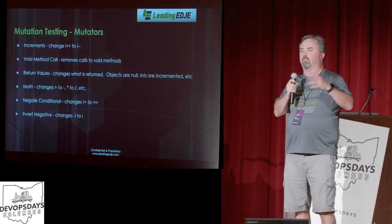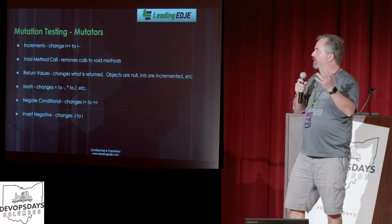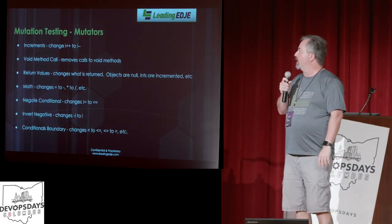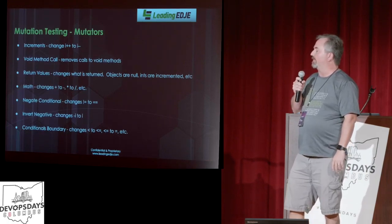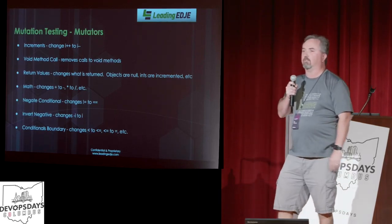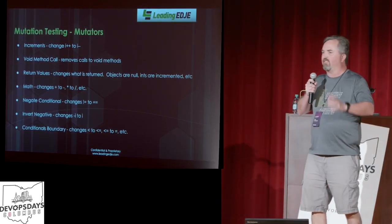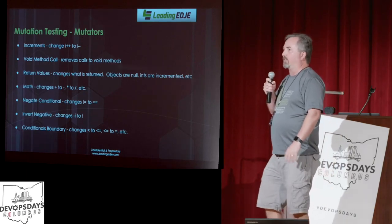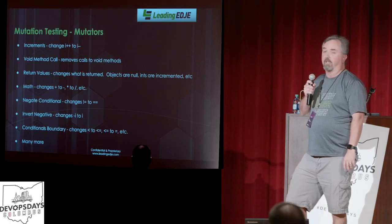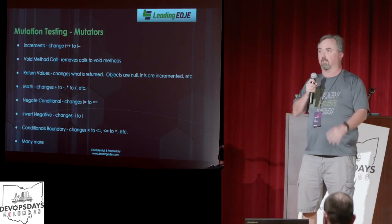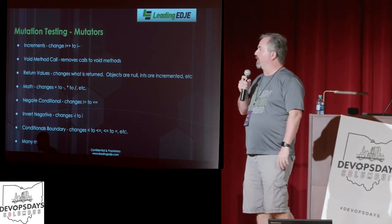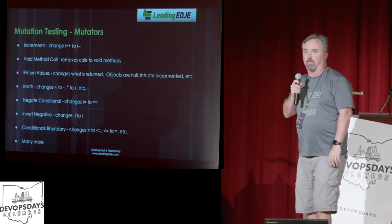There's a whole bunch more. These are just mostly the defaults you get out of the box when you want to run it. It'll also change boundary conditions — like if you have less than, it'll do less than or equal. So again, it's going through your code and fiddling with it like crazy and making sure all your tests better fail. There are many more mutators — these are pretty much the defaults. You can look up more for your specific language, and in a minute I'll go over what some of the different frameworks might be for the language you might want to try this out on.